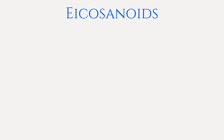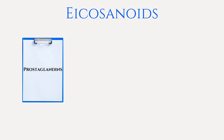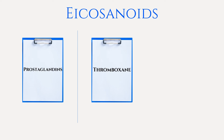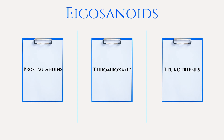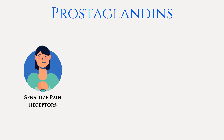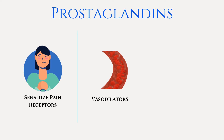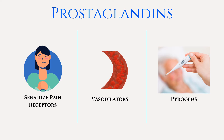Eicosanoids are derived from the conversion of arachidonic acid. Prostaglandins sensitize pain receptors, are potent vasodilators which lead to erythema and heat at the inflammation site, and they are also pyrogens, meaning that they cause fever by stimulating the temperature regulation area of the hypothalamus, directly increasing the body's thermostatic set point. Tylenol works to reduce fever by inhibiting prostaglandin synthesis.